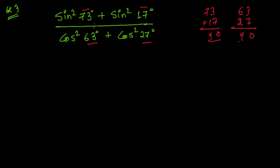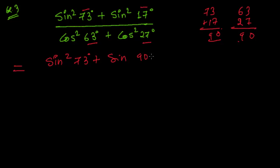Let me start with sin²73°. I can write sin 17° as sin(90° − 73°), because 90 minus 73 equals 17. Since it is squared, I write it as sin²(90° − 73°). Now let's go to the denominator — we have cos²63°.